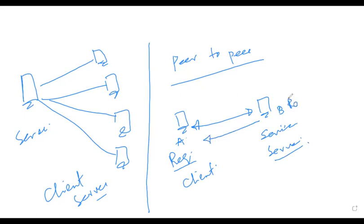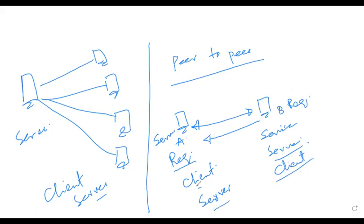In the next clock pulse, there is a possibility that node B is requesting and node A is providing the service. In that case, node A will become the server and node B will become the client. This is an interchangeable relationship between both nodes — it depends on who is providing service to which node.